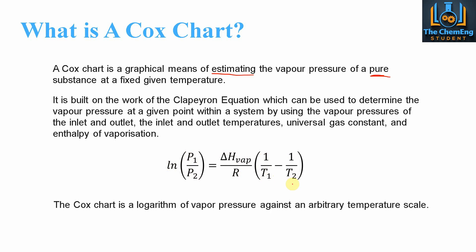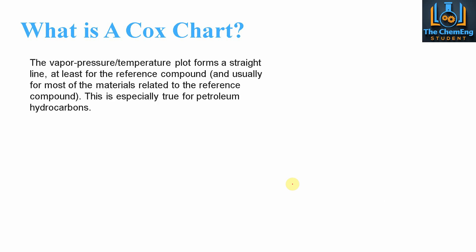The Cox chart is a logarithmic plot of vapour pressure against an arbitrary temperature scale. Only the y-axis — the vapour pressure axis — is logarithmic. The x-axis, which is the temperature scale, is a standard Cartesian coordinate. In essence, the vapour pressure-temperature plot forms a straight line, at least for the reference compounds. Normally most materials are related to the reference compounds, so there is a plethora of different Cox charts for different types of systems.